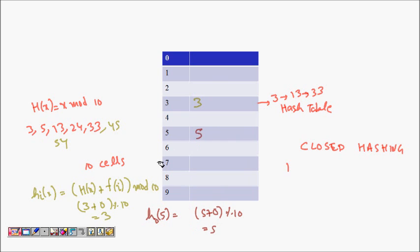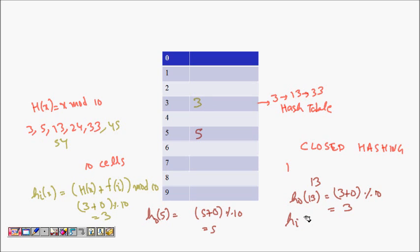For 13: h_0(13) = 13 mod 10 = 3, but cell 3 is already occupied — collision. So we try i=1: h_1(13) = 3 + 1² mod 10 = 4 mod 10 = 4. Cell 4 is empty, so 13 is inserted at cell 4.